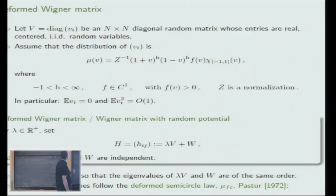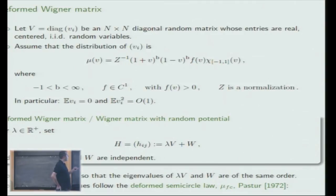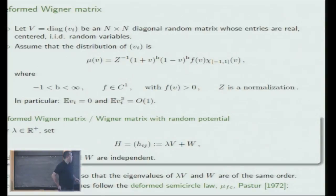To define deformed Wigner matrices, let me first introduce another matrix, which I denote V. It's a diagonal matrix of size N whose entries are IID real random variables, and I will assume that they have a Jacobi-type distribution mu, supported on the interval minus 1, 1. At the edge, the behavior is given by exponent B, which is between minus 1 and infinity. F is some sufficiently regular, strictly positive function, and C is a normalization constant to make mu a probability measure.